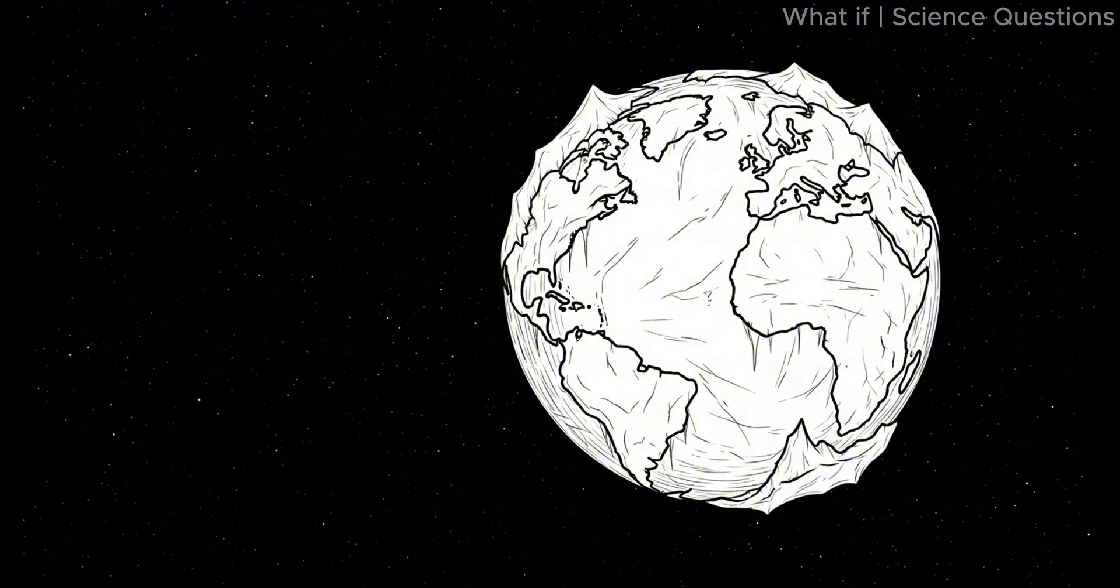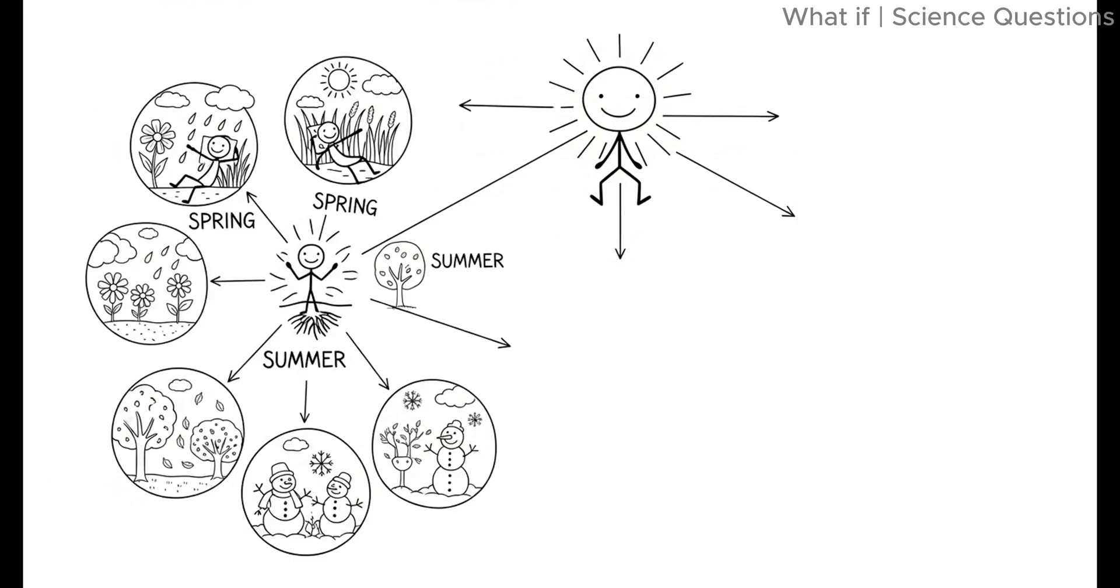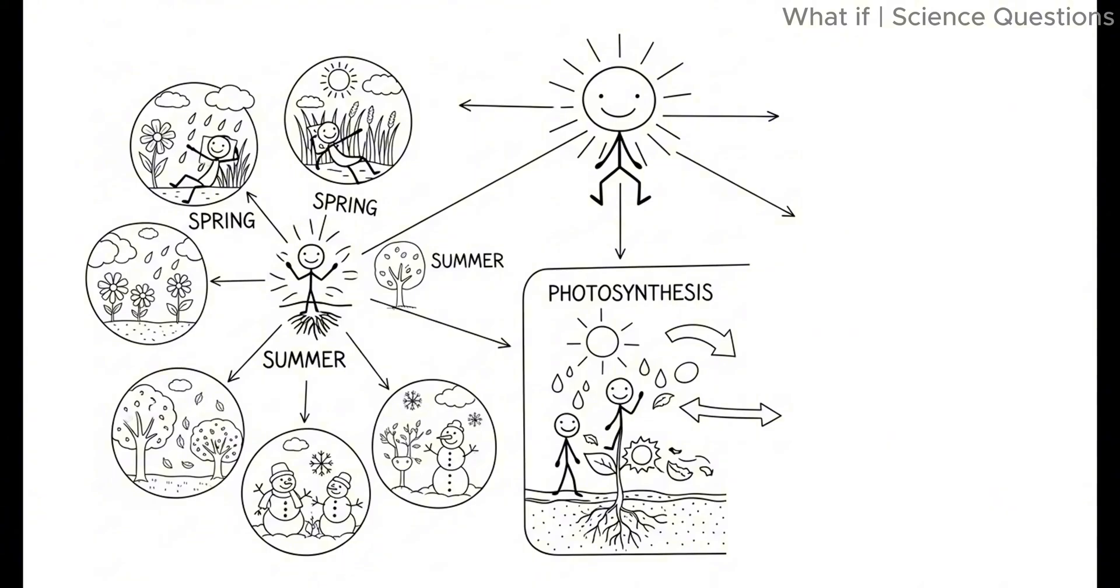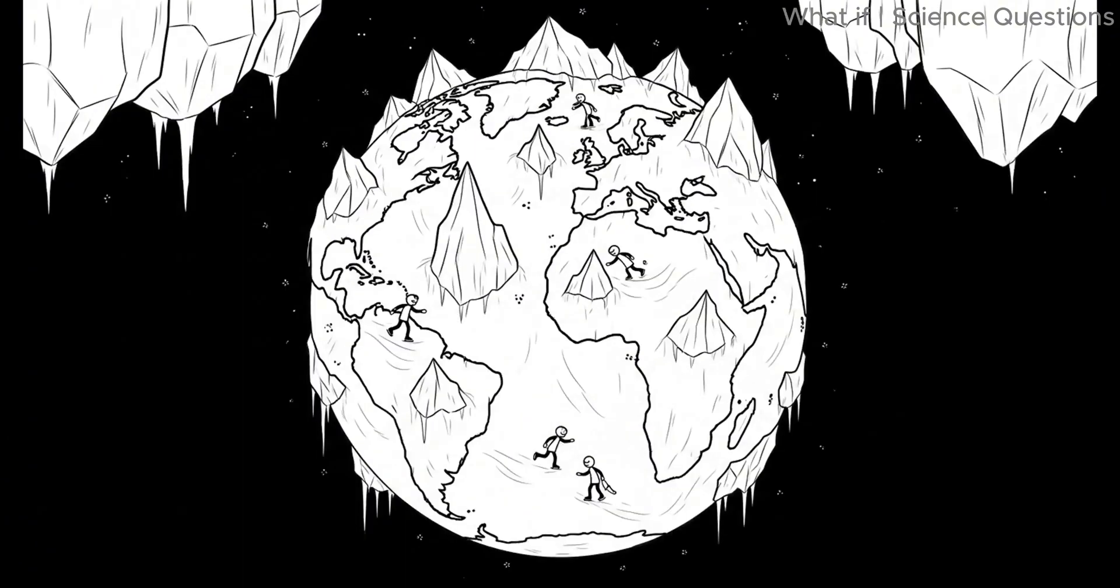The long-term fate. As Earth drifts endlessly into interstellar space, it becomes a dark, frozen world. With no sun, no seasons, no photosynthesis, and no stable food chain, our planet slowly transforms into a silent ice ball.